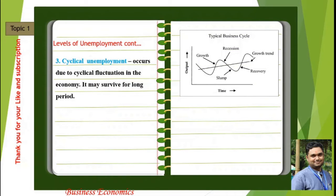Next is cyclical unemployment. This occurs due to cyclical fluctuations in the economy and may last for a longer period of time depending on the length of the business cycle. Here is a typical business cycle: this is the growth phase, this is the recession or slump phase, this is the recovery phase, and this is again the growth stage.